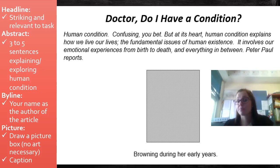Here you can see we've got the first part of our feature article. We've got a headline that's striking and relevant to the task. We then have an abstract which is three to five sentences explaining and exploring the human condition. A byline which is your name. We've got a picture and a caption. Now it's really not necessary to draw a picture. A simple box that would show where the picture would be but a caption is important. Don't get caught up trying to draw a picture in the middle of the exam. Just show the reader that you would have included a picture and explain what that would be about through the use of a clever caption.